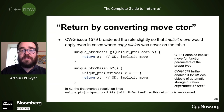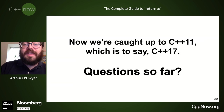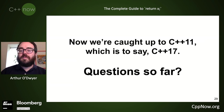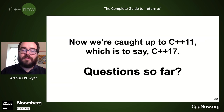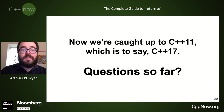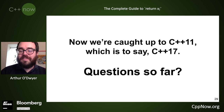So all local objects of automatic storage duration, regardless of type, get implicit move starting with the resolution of CWG 1579 in C++11. Nothing really changed through C++14 and C++17 until C++20. Let's talk about that next — but first I'll switch over and take questions.